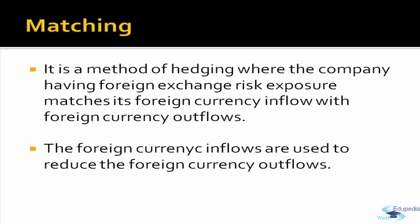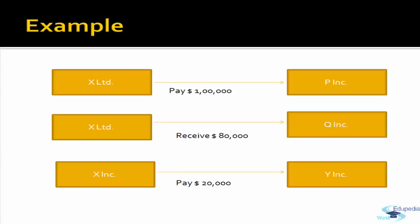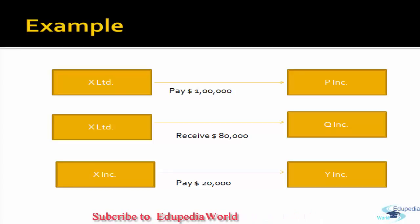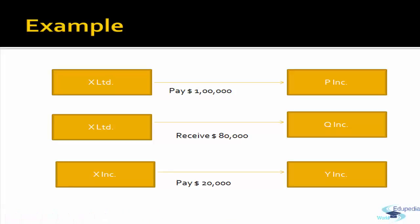The matching method involves companies matching their foreign exchange inflows with their outflows. For example, X Limited has to pay USD 1 lakh to P Incorporation (UK) and receive USD 80,000 from Q Incorporation (also UK). Instead of two separate transactions, Q Incorporation pays USD 80,000 directly to P Incorporation on behalf of X Limited, and X Limited only pays the net USD 20,000 to P Incorporation. This saves transaction costs and reduces exchange margins paid.